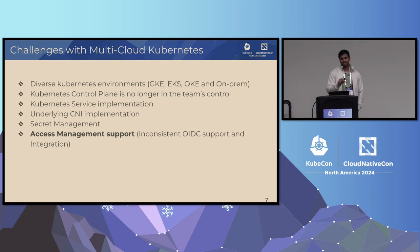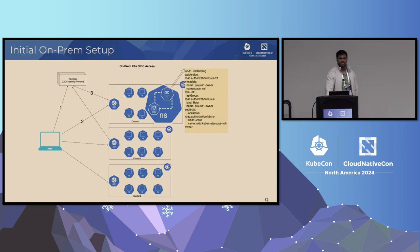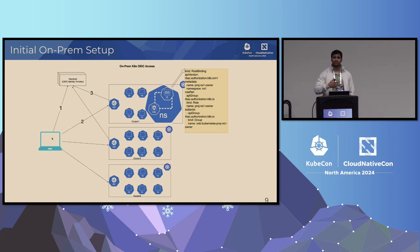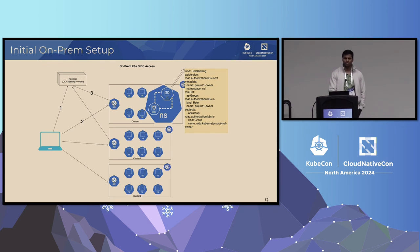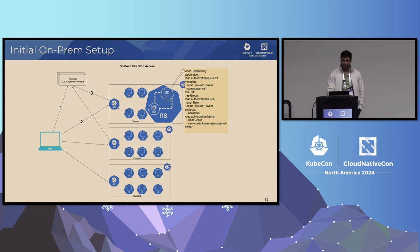Let's zoom in on access management. Before our cloud journey, this was our on-prem setup. Whenever a user runs kubectl get pods on their laptop, it goes to an identity provider — in our case, Keycloak. The user gets a user session token, and kubectl passes that token to the respective cluster's API server. The API server talks to Keycloak to verify and decode that ID token, gets user and group information, and based on that decides whether to respond to the specific request.